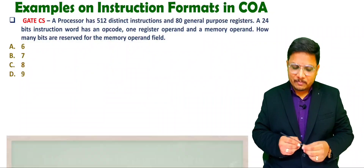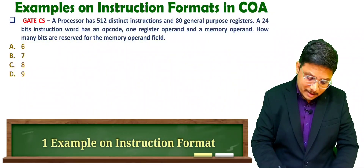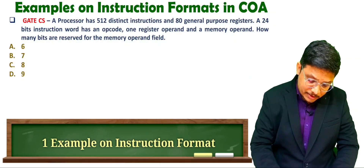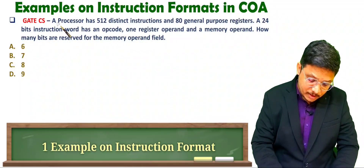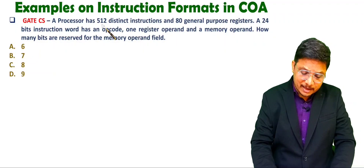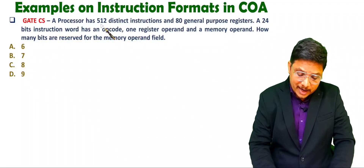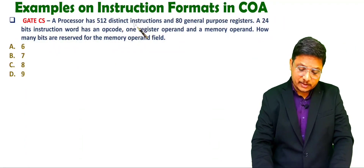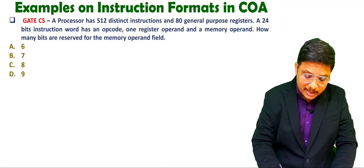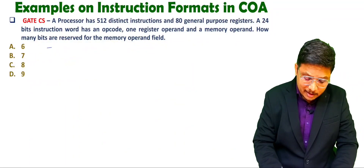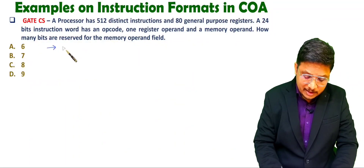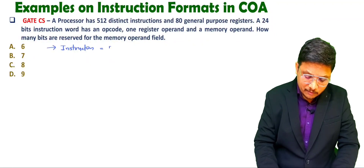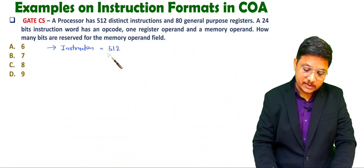Let us solve the first question. In the first question, if you observe, a processor is having 512 different instructions. So first of all you need to mention the data which is given in the question. How many instructions are there? 512 number of instructions are there.